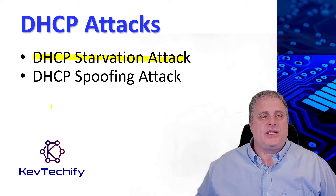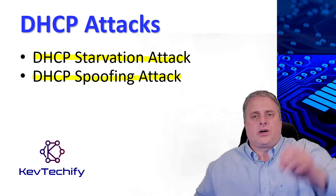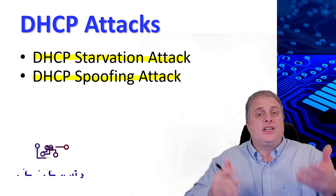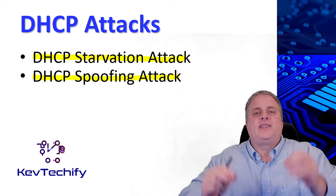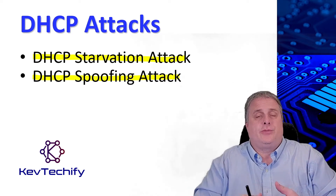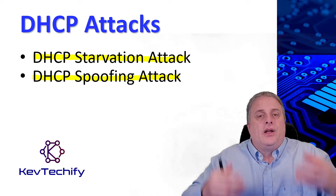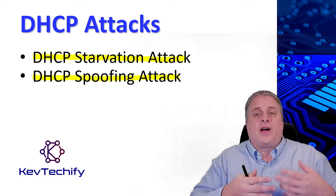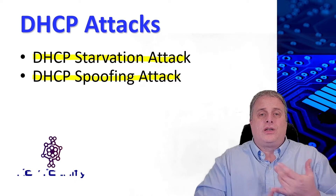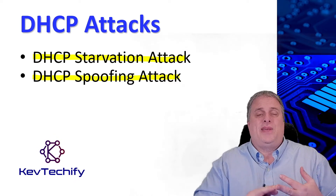The DHCP spoofing attack occurs when a rogue DHCP server is connected to the network and provides false IP configuration parameters to legitimate clients — it's a fake DHCP server. A rogue server can provide a variety of misleading information, including wrong default gateways, wrong DNS servers, and wrong IP addresses.